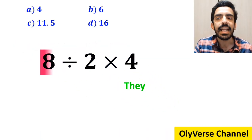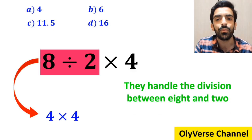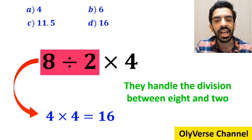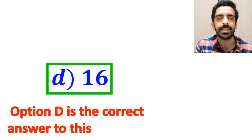In the final step, they handle the division between 8 and 2, and rewrite this expression as 4 multiplied by 4, which eventually gives them the answer 16. Then, without any hesitation, they quickly say that option D is the correct answer to this question.